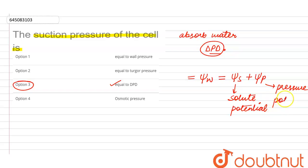So here we can see that the DPD is equivalent to the suction pressure whereas DPD depends upon the solute concentration of the cell. So always we see here that the water is going to get translocated from the value of a higher ψW to a lower ψW.